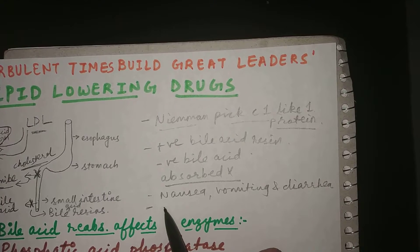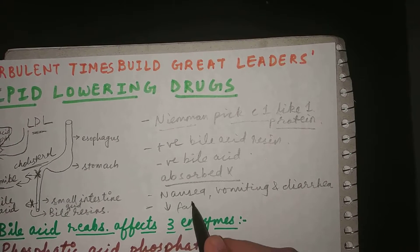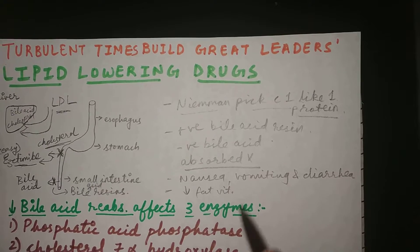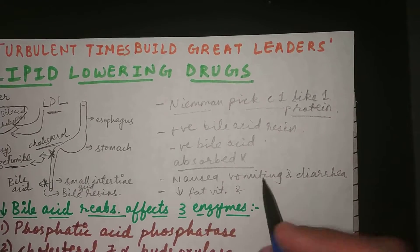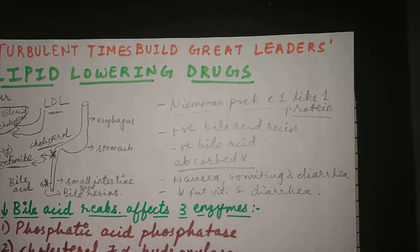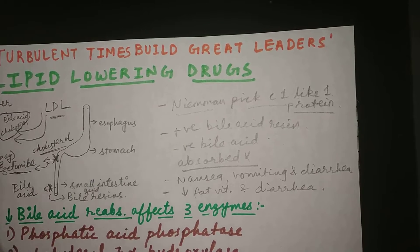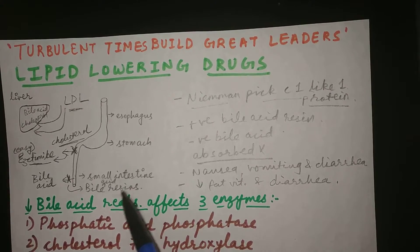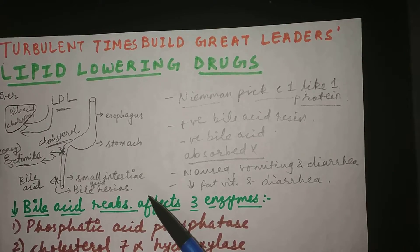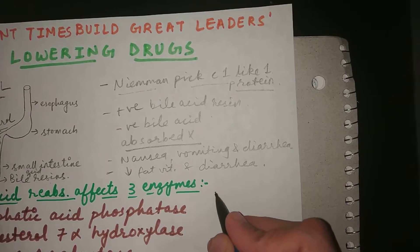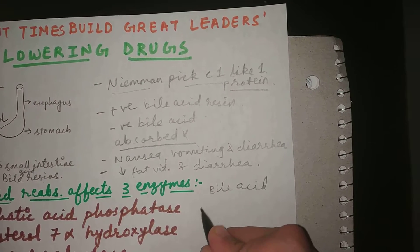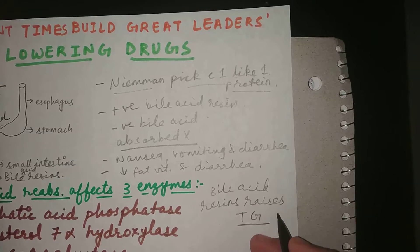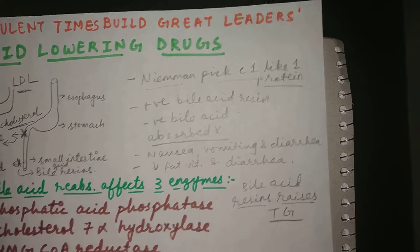Other than GI side effects, bile acid resins will cause a decrease in fat-soluble vitamins — that's the main notable side effect. Ezetimibe also causes diarrhea. One key thing to remember is that bile acid resins increase triglyceride levels and are the only lipid lowering drug that can cause an increase in triglycerides. A mnemonic: resins raise triglycerides.